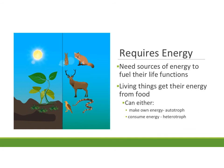Our next characteristic is it has to require energy to fuel its life functions. There are two ways organisms get energy: some make their own — those are called autotrophs, like plants and flowers. Others consume energy — those are called heterotrophs, like us, since we need to eat food to get our energy.